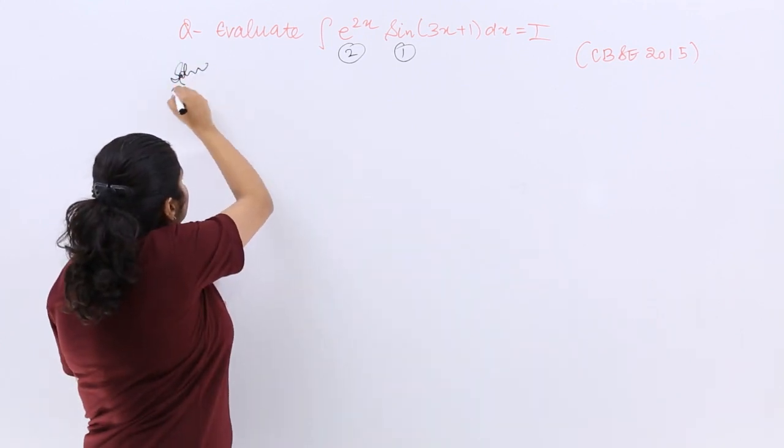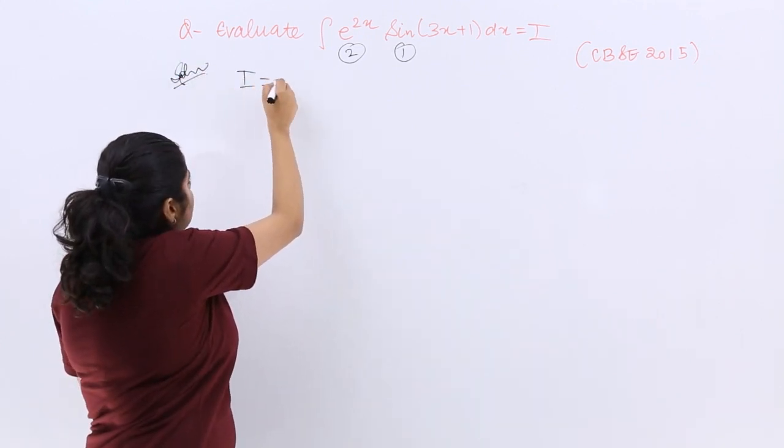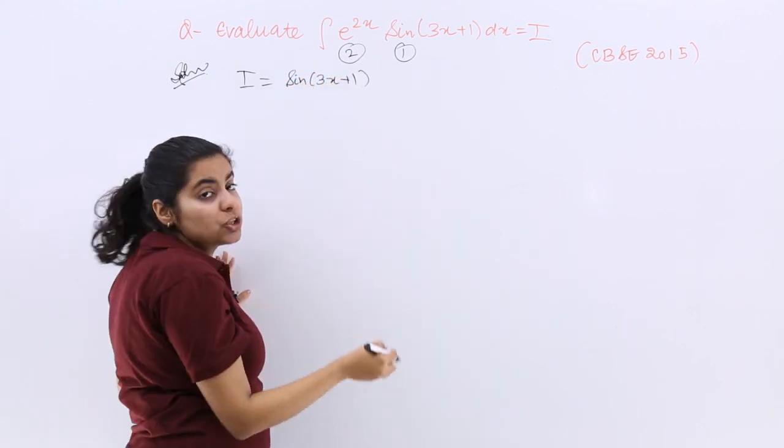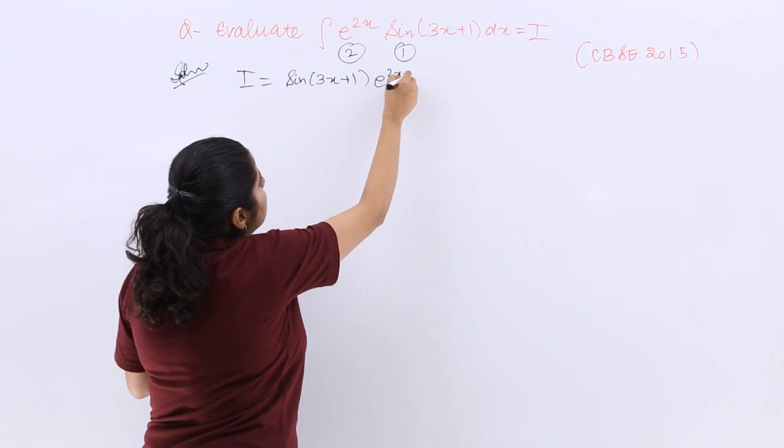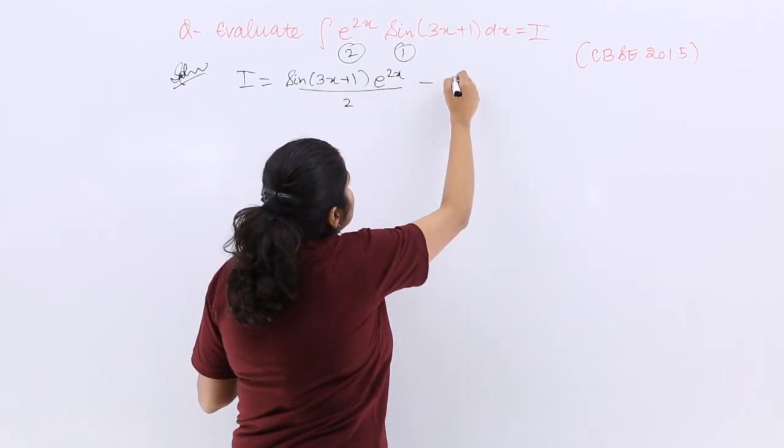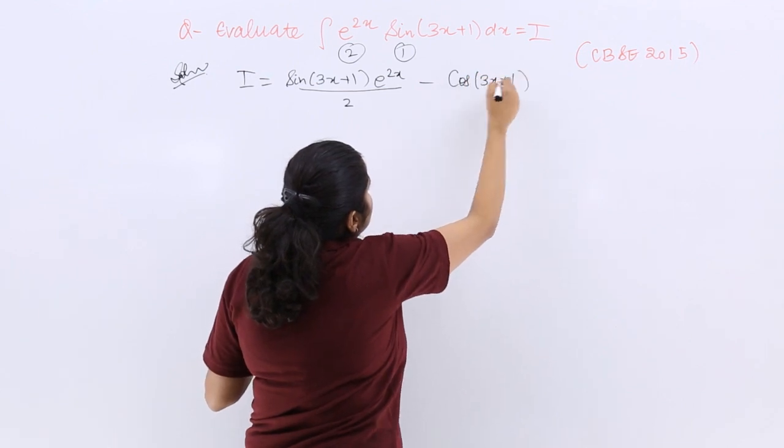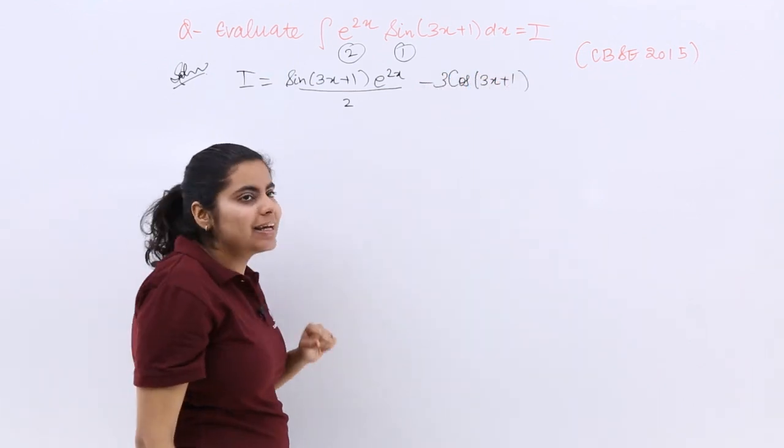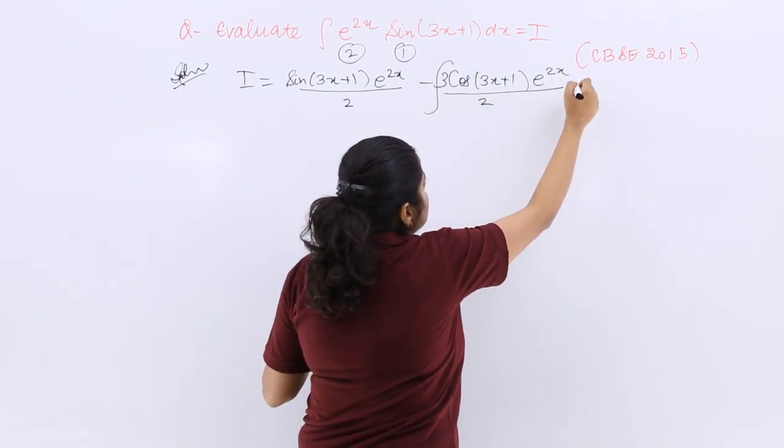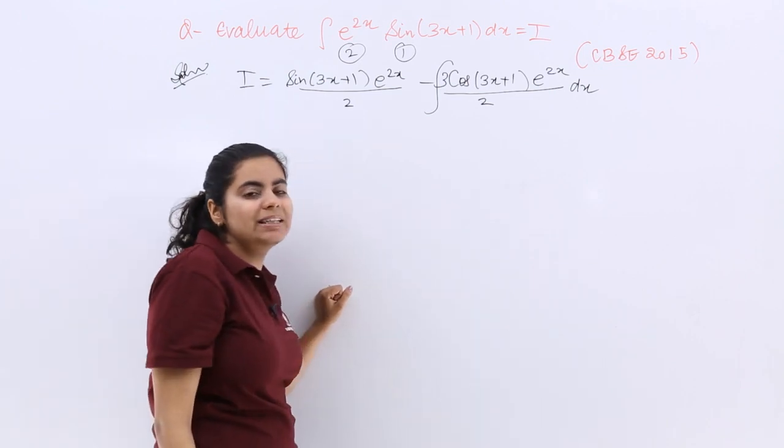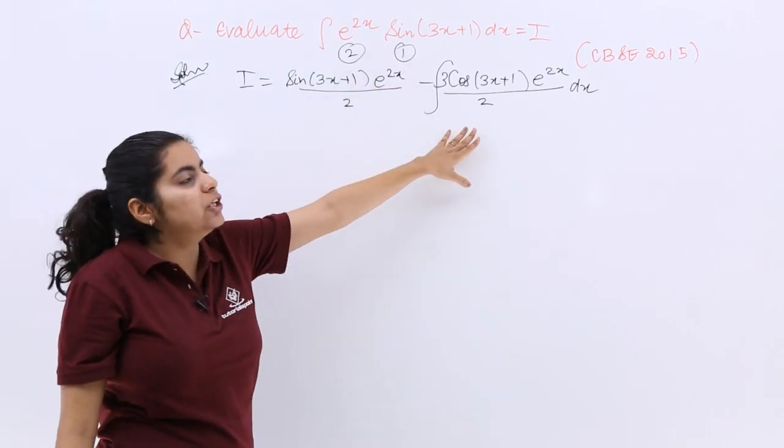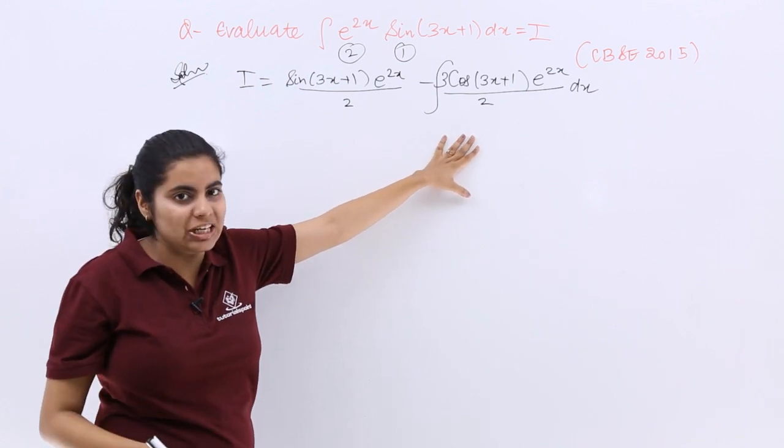I write solution. So I should be first function into integration of second. So e raised to the power 2x upon 2 minus differentiation of first function into integration of second function, whole integration with respect to x. In differentiation the constants are multiplied and the denominator comes in case of integration.